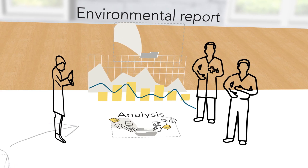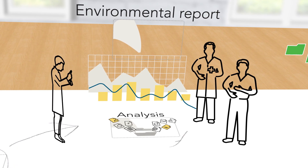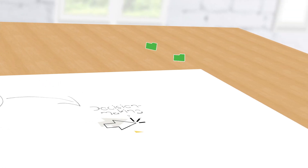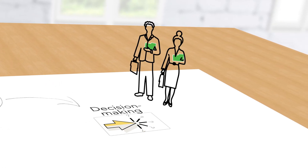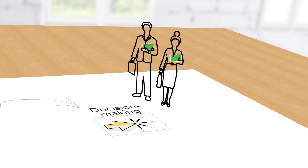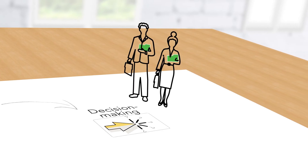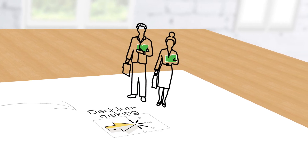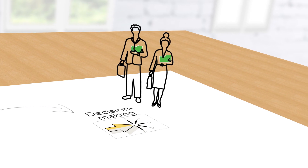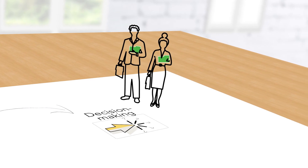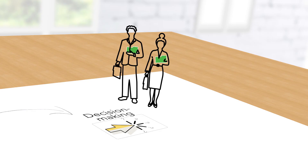The protocol on SEA specifies the required contents for the report. Those authorities that have to decide on the adoption of a plan or program, say in the Ministry of Energy, now have valuable information to help them consider environmental and health effects, so they can take the best decision for their community.